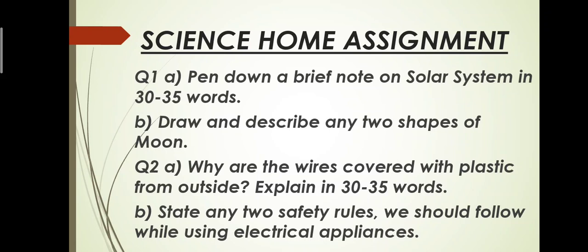The B question is state any two safety rules we should follow while using electrical appliances. This answer is not written in your science book but this question is related to chapter number 17 using electricity. For example, if electricity is flowing from any switch you should not touch that switch with wet hands because it can harm you. There are many safety rules, you have to write down only two safety rules by your own, any two safety rules which you think are correct.